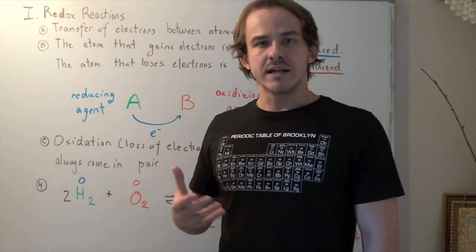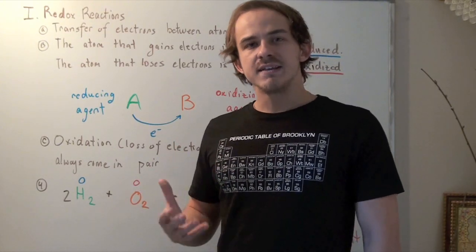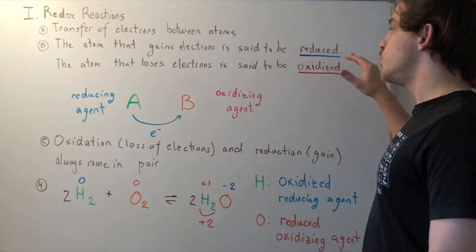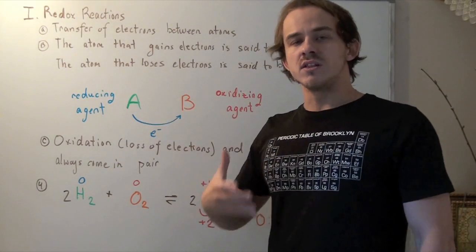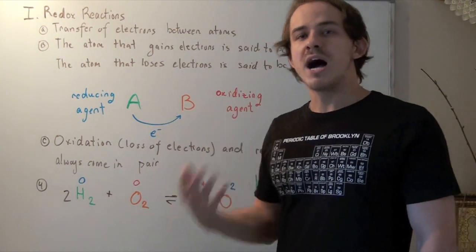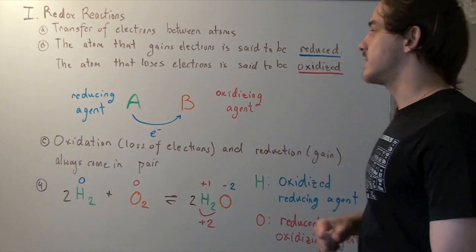The atom that gains the electrons becomes more negative and is said to be reduced. The atom that loses the electrons becomes more positive and is said to be oxidized.